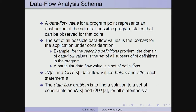The set of all possible data flow values is the domain for the application under consideration. For each application this domain is going to be different: for reaching definitions it would be sets of all subsets of definitions; for available expressions it would be the sets of all subsets of expressions; for the live variables problem it would be the set of all subsets of variables. We also have two quantities, in and out, which are the data flow values before and after each statement. We are going to be interested in a larger grain size — a basic block — rather than just a single statement.